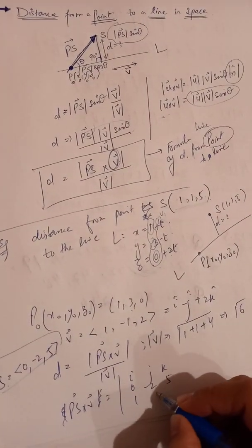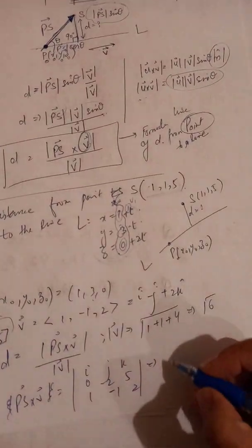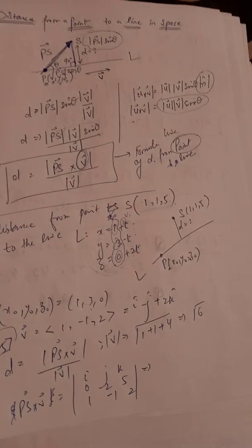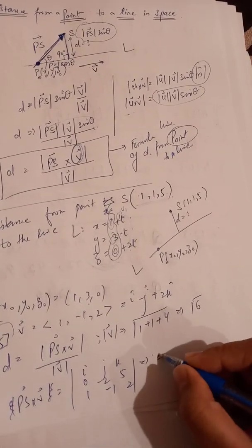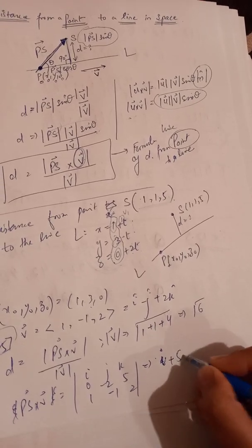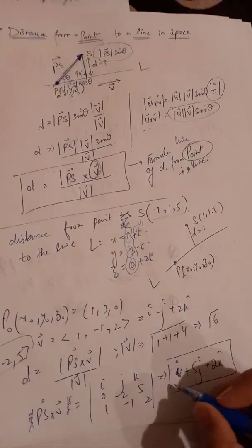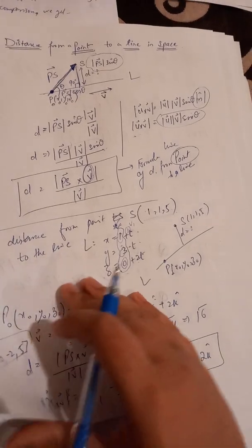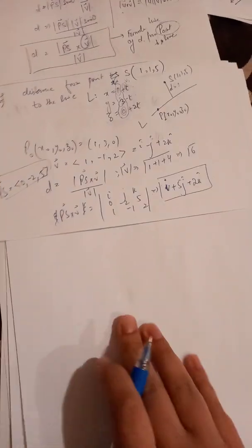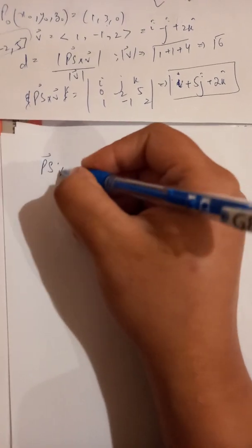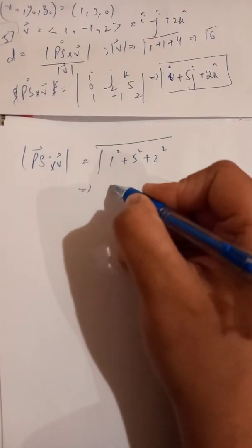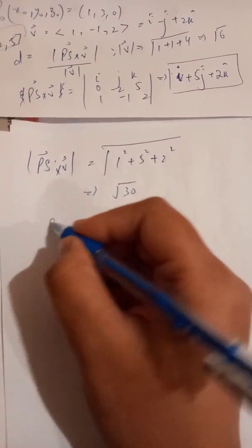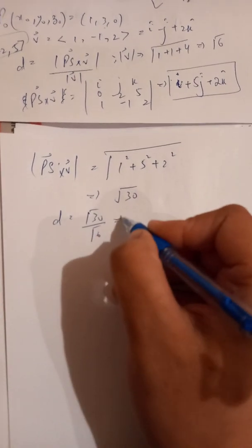We compute PS × v using the determinant: PS = (0, −2, 5) and v = (1, −1, 2). The cross product gives i + 5j + 2k. Taking the magnitude: |PS × v| = √(1² + 5² + 2²) = √(1 + 25 + 4) = √30.